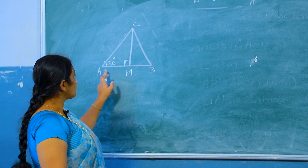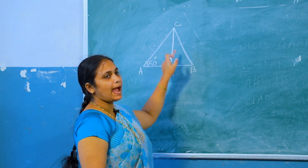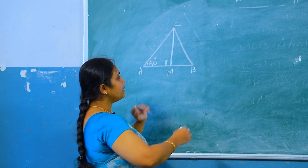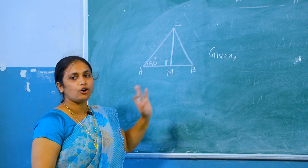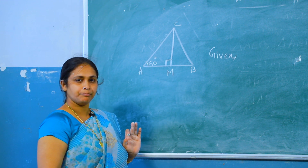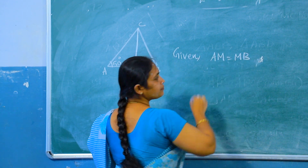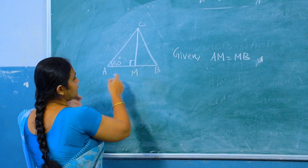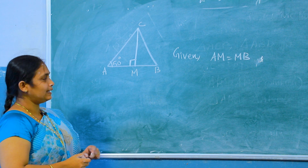In this figure, M is the midpoint of AB — find the other two angles of triangle ABC. It is given that M is the midpoint of AB and this angle is equal to 90 degrees.